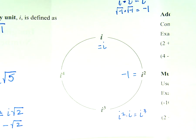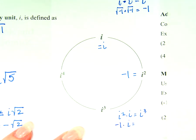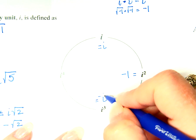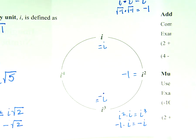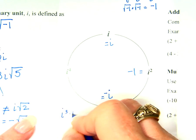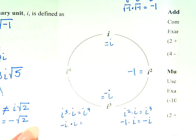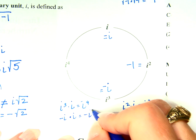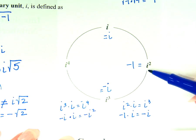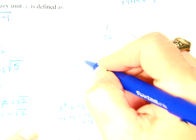Couldn't we get i to the third that way? What did we just decide i squared was equal to? Negative 1. What's negative 1 times i? Negative i. i to the third is actually equal to negative i, which takes us to i to the fourth. Couldn't I get i to the fourth by saying i to the third times i? What did we just decide i to the third was? Negative i. And what's negative i times i? Negative i squared. But i squared is negative 1, so negative times negative 1 is positive 1. i to the fourth equals 1.